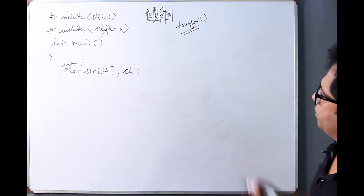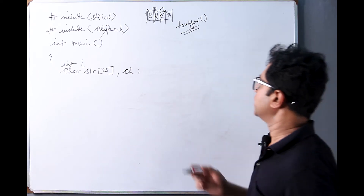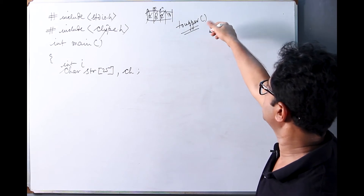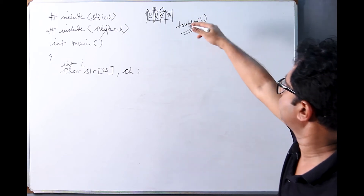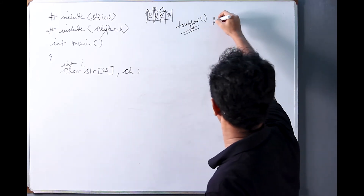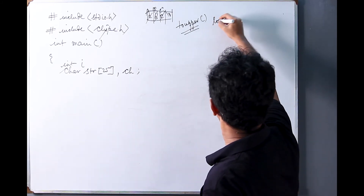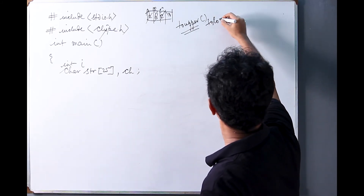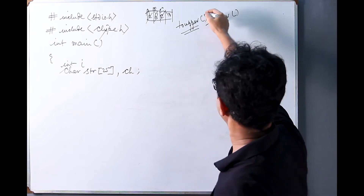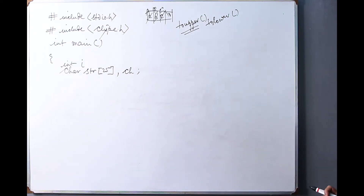An analogous function that does the opposite work — going from uppercase to lowercase — is called tolower(). If you understand the toupper() part, you can also understand tolower() as well.